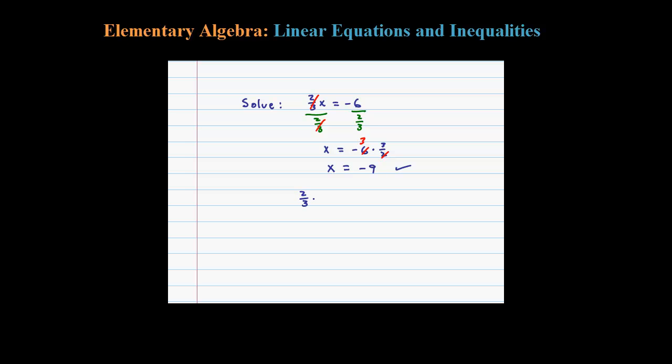We could certainly do this one in one step using a little bit of a trick. Notice when we divide by 2/3rds, we end up multiplying by the reciprocal. So you can use that knowledge.